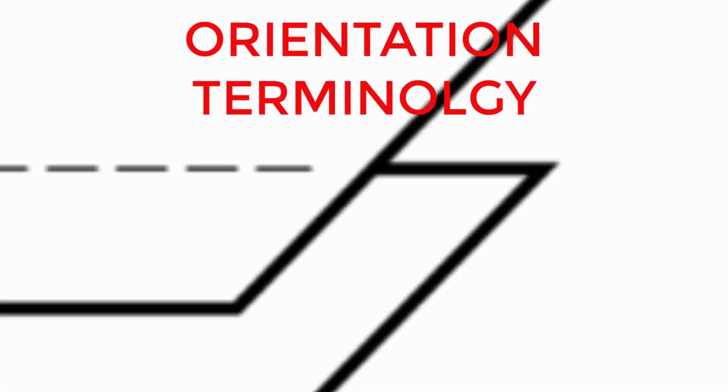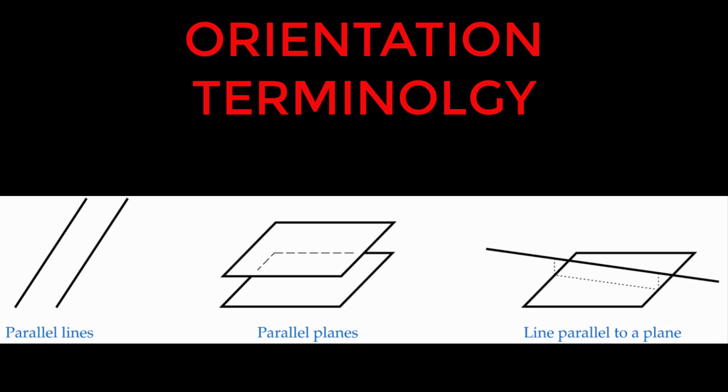When dealing with more than one entity at a time, orientation terminology comes up. Geometric elements are often parallel, perpendicular, or tangent to each other and this can occur in 2D and 3D.